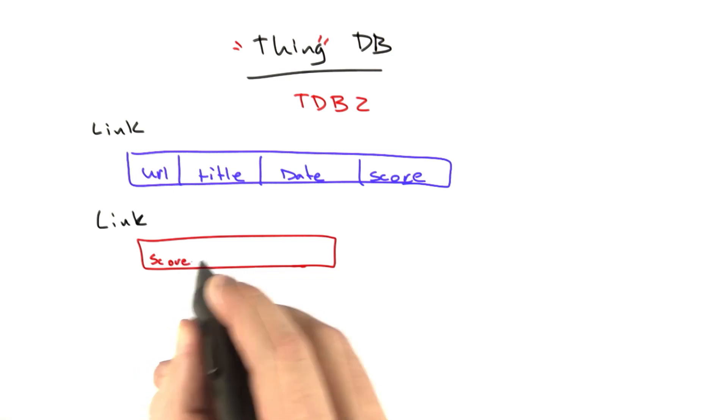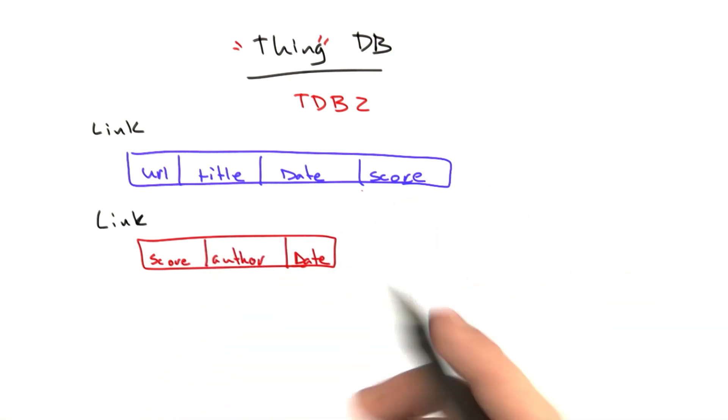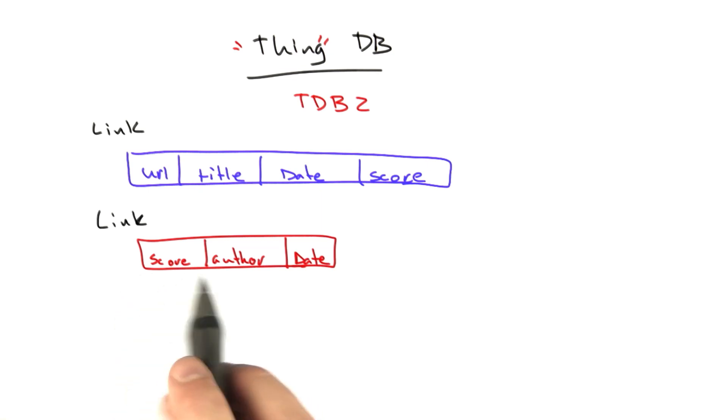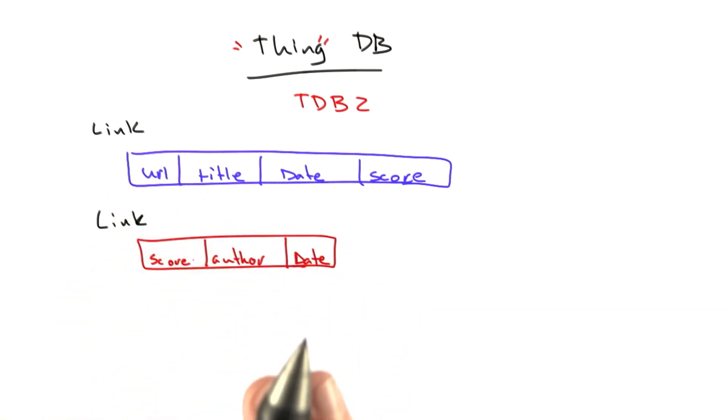Everything has a score, an author, and a date. There might be a few other fields, like ups and downs. But basically, everything, whether it's a link, whether it's a comment, whether it's a subreddit, anything has these fixed columns. It's not useful for all of them, but it was pretty common enough.